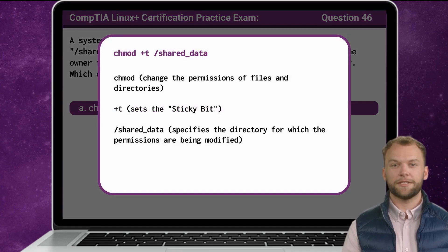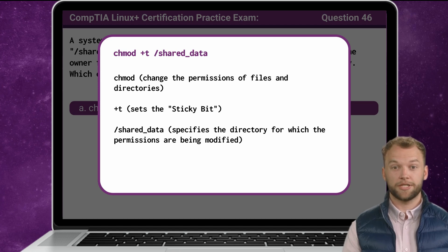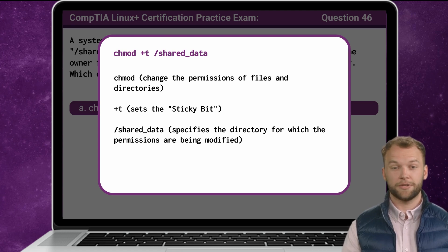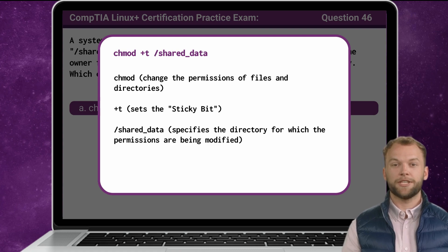Now that we know the answer, let's break it down. The chmod command is used in Linux to change the permissions of files and directories. The +t option sets the sticky bit on the directory. When the sticky bit is set on a directory, it restricts the deletion or renaming of files within the directory to only the file owner, the directory owner, or the root user. The /shared_data specifies the directory for which the permissions are being modified.